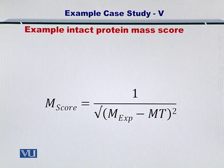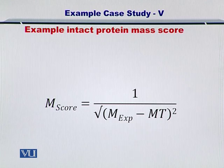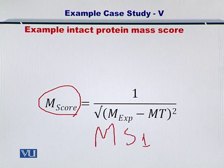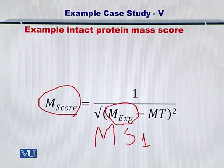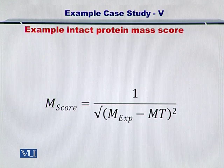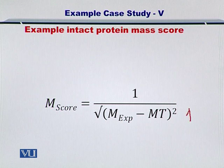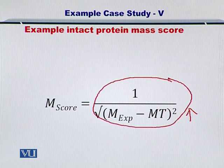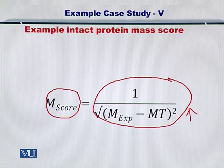If the score of the experimental data versus the theoretical data for MS1 is to be computed, then simply you take the difference between the experimental mass and the theoretical mass of the proteins. If this number is small, then it means there is a good chance that the experimental protein is the same as the protein you are looking at from the database. If this number is large, then the error is large and the score would become small.